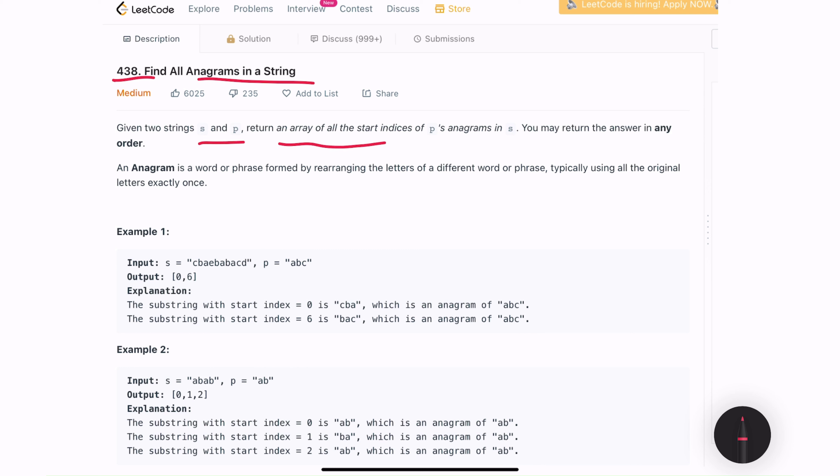We need to return an array of all the starting indices of p's anagram in s. We can return the answer in any order. If you don't know what anagram is, it is a word or a phrase formed by rearranging the letters of a different word or phrase. Typically, using all of the original letters exactly once.